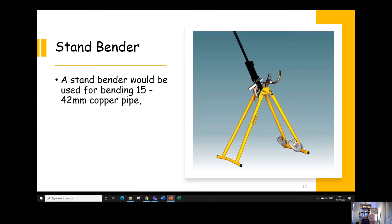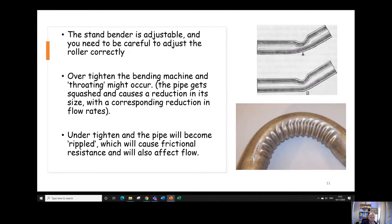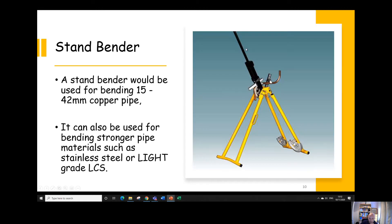Stand bender from 15 mil up to 42 mil can bend and you might use it for light grade steel only. You wouldn't use it for medium or heavy grade steel because it would be just too difficult to bend. The stand bender is adjustable. It's this bit here, if you twist that bit there, that will move the roller in or out. And you do that depending on what size of pipe you're bending.